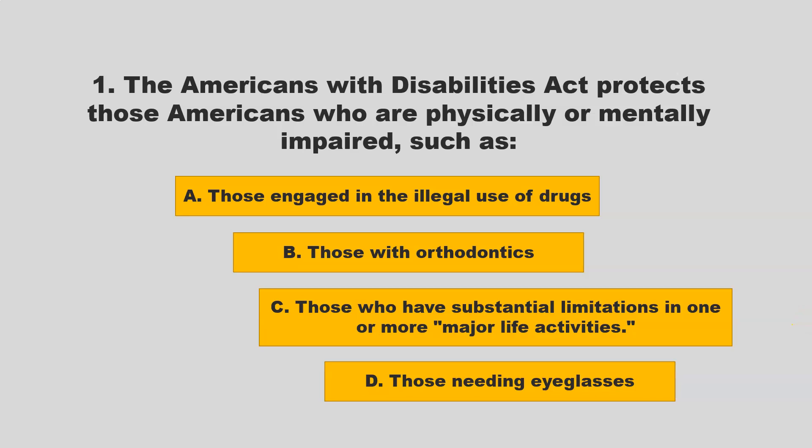The Americans with Disabilities Act protects those Americans who are physically or mentally impaired, such as those engaged in the illegal use of drugs, those with orthodontics, those who have substantial limitations in one or more major life activities, those needing eyeglasses. If you chose C — those who have substantial limitations in one or more major life activities — you are correct.